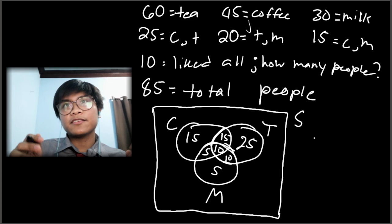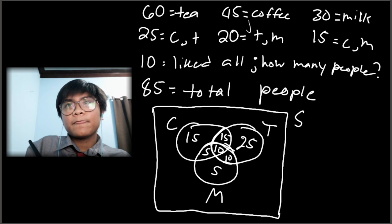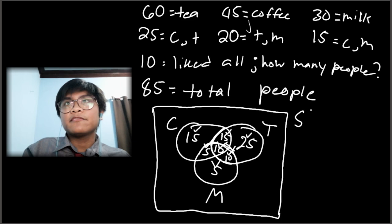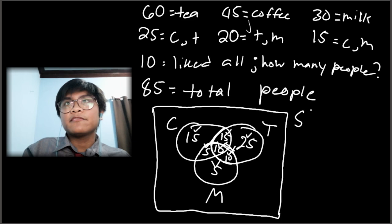Adding all regions to verify: 25 + 15 = 40, plus 15 = 55, plus 10 = 65, plus 10 = 75, plus 5 = 80, plus 5 = 85. Indeed the total is 85, confirming everything is correct. I am Eugene Allen P. Matero from BSCS2C, and this is the end of the video. Thank you.